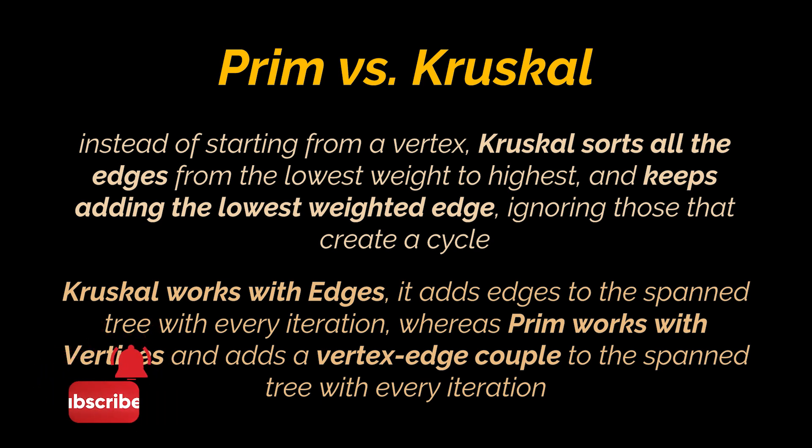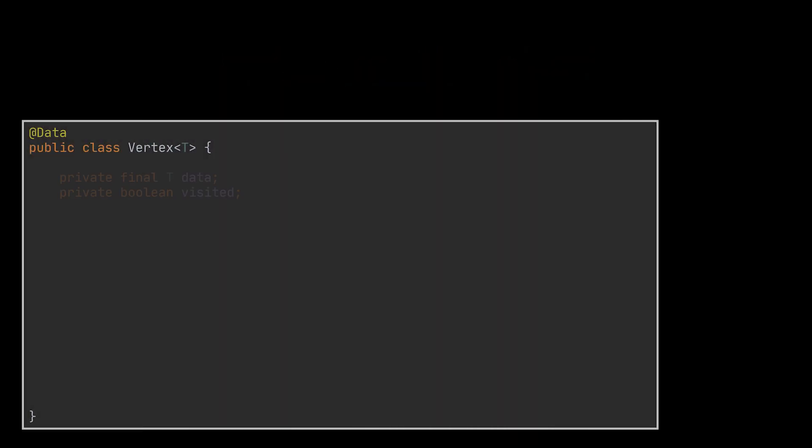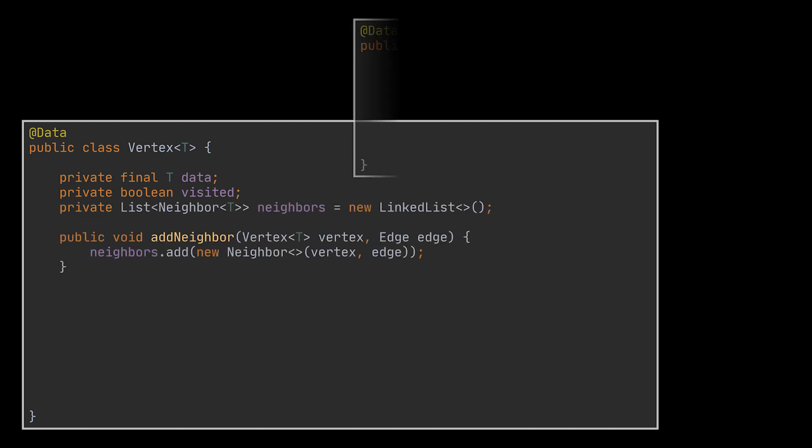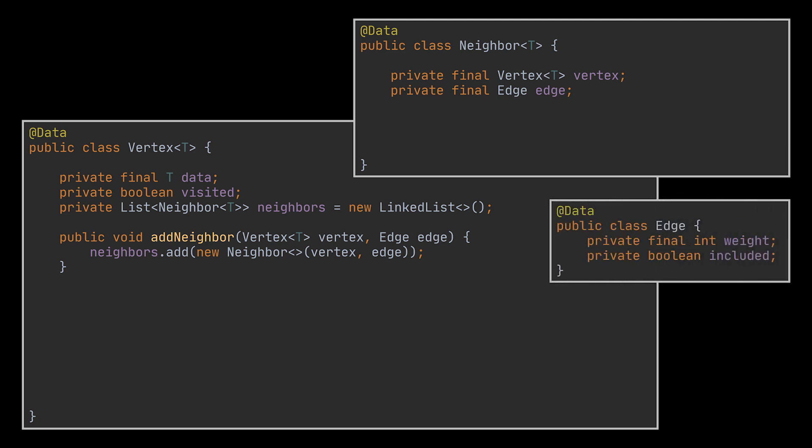Ok, let's go ahead now and implement this algorithm. And to do this we are going to need our famous vertex class. This class will house the data stored inside the vertex and a visited attribute. To keep track of the edge vertices pair linked to a particular vertex and be able to add them together as a couple, we created a neighbor class and an addNeighborHelper method. This class will contain as mentioned our vertex class and an edge class. The latter is also represented by a separate class containing the weight of the edge and an attribute to specify whether this edge was included in our spanning tree or not.